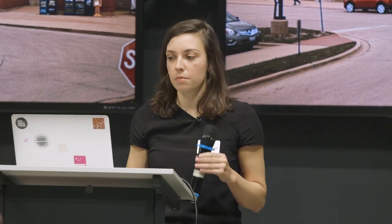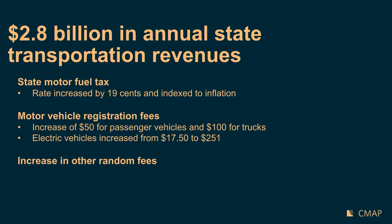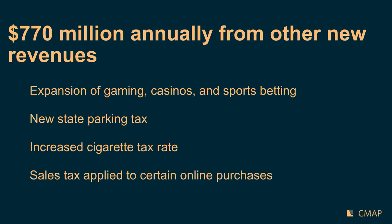It's a significant investment in multimodal transportation, and beyond transportation it's a broad investment in public facilities, open space, and affordable housing. For new transportation revenues, there's $2.8 billion in new revenues annually at full implementation, coming from several sources: the increase to the state gas tax — the motor fuel tax — now indexed to inflation for the first time, a long-standing CMAP recommendation. There are also increases to registration fees for passenger vehicles, trucks, and electric vehicles, plus increases to titling fees and other charges.